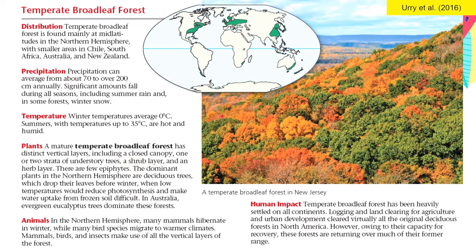To sum up, temperate forests are found in the northern hemisphere, mostly in America, Europe, and parts of Asia, and even some parts of Australia. Precipitation can range from about 70 to 200 centimeters annually. Significant amounts of precipitation fall mostly during all seasons, including summer rain and, in some forests, winter snow. Temperatures are quite extreme with 0 degrees Celsius during winter, and summers can be very hot and humid, reaching up to 35 degrees Celsius.